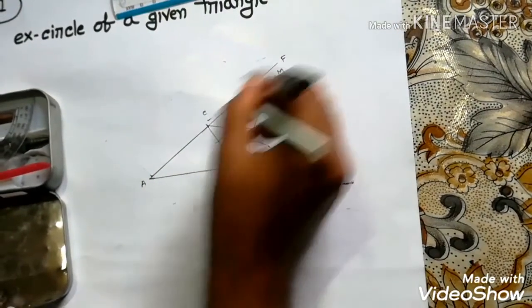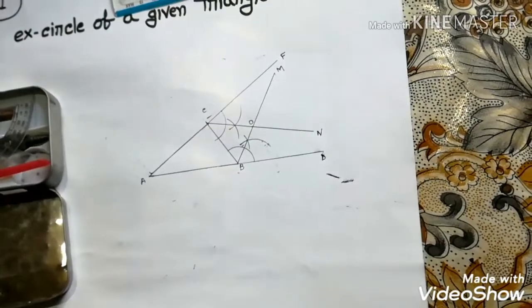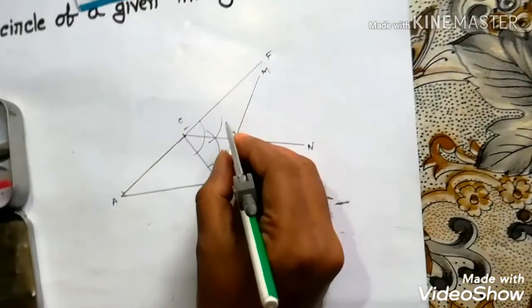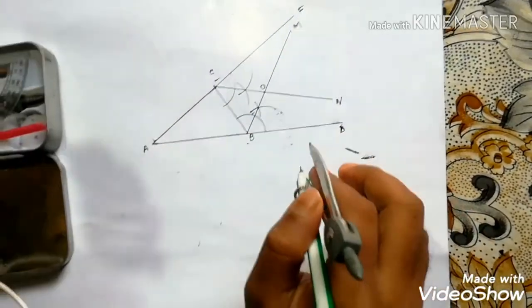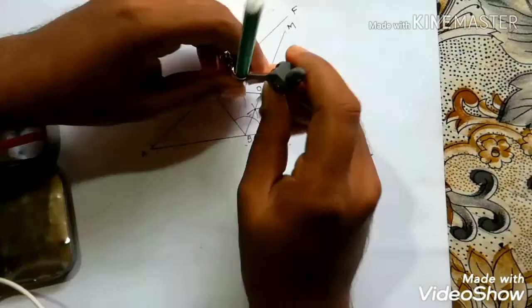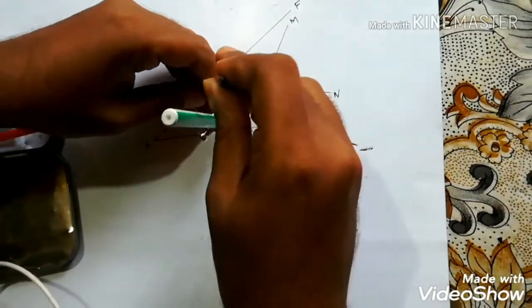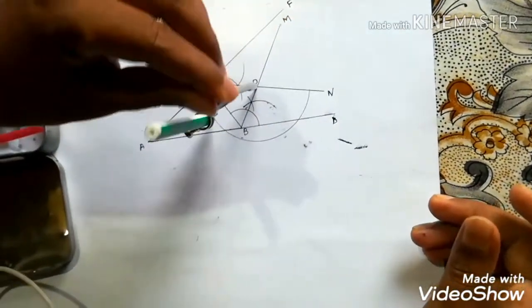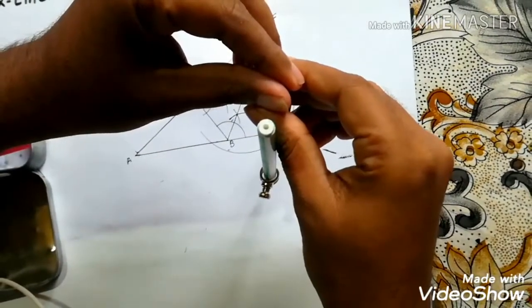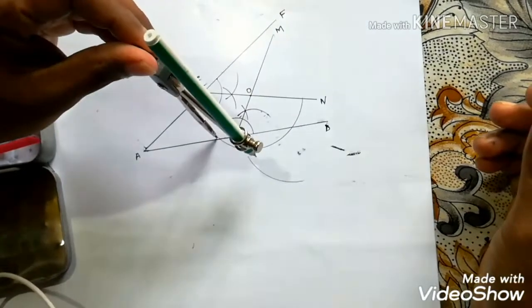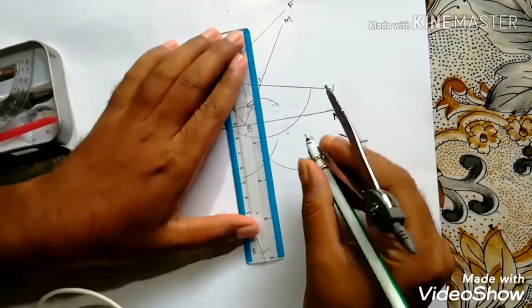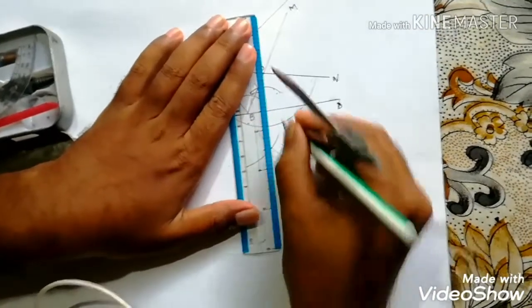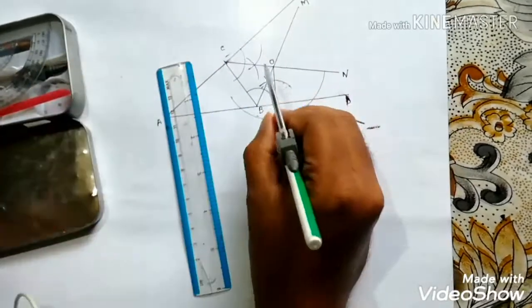And the intersection of both BM and CN is O. Now from O, perpendicular OG is drawn on AD. Here we now draw a perpendicular on line AD. We draw perpendicular OG on line AD.